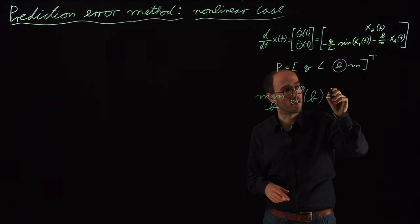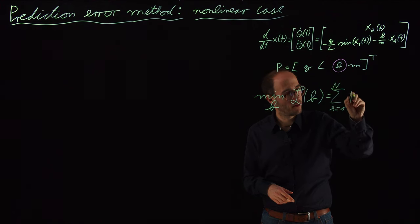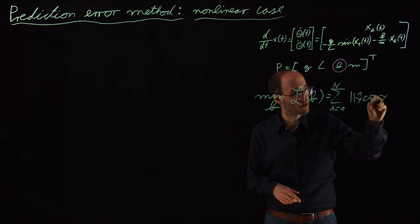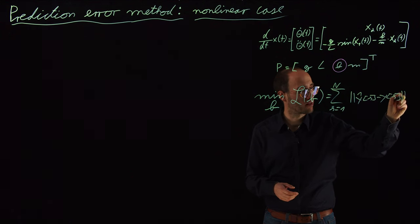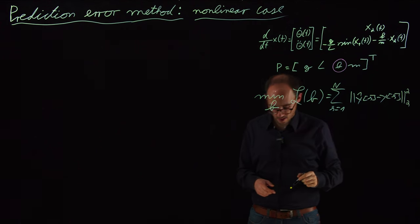Which is the sum of k equals 1 to capital M, of y hat of k minus y of k, where y of k is some measurement data or artificial data to the Euclidean squared distance is minimized.